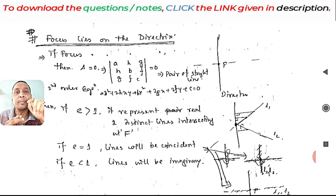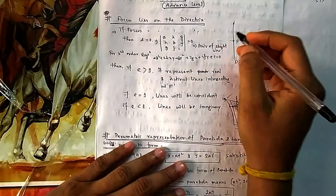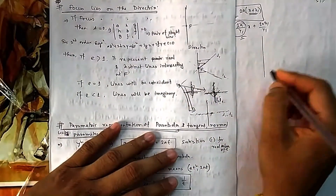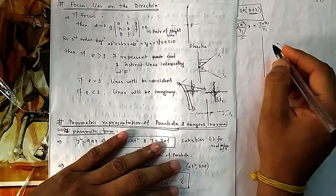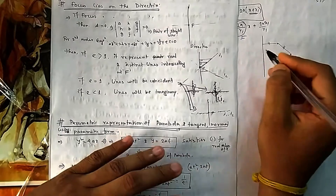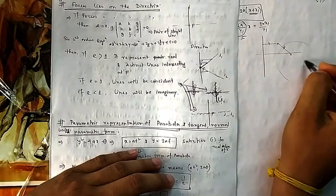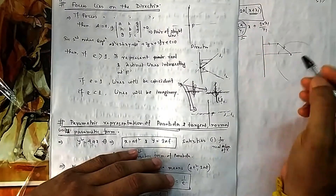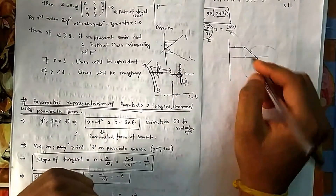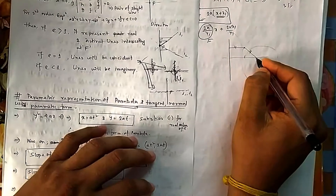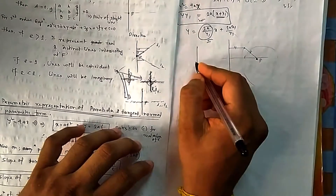What happens if your focus lies on the directrix itself? We have seen at the start of conic sections that there is a directrix and a focus, and the conic section is all about the ratio between the distance from the point and the distance from the line. If that ratio equals 1 it is a parabola, less than 1 it is an ellipse, and more than 1 it is a hyperbola. Now what happens if the focus comes on the directrix line itself?